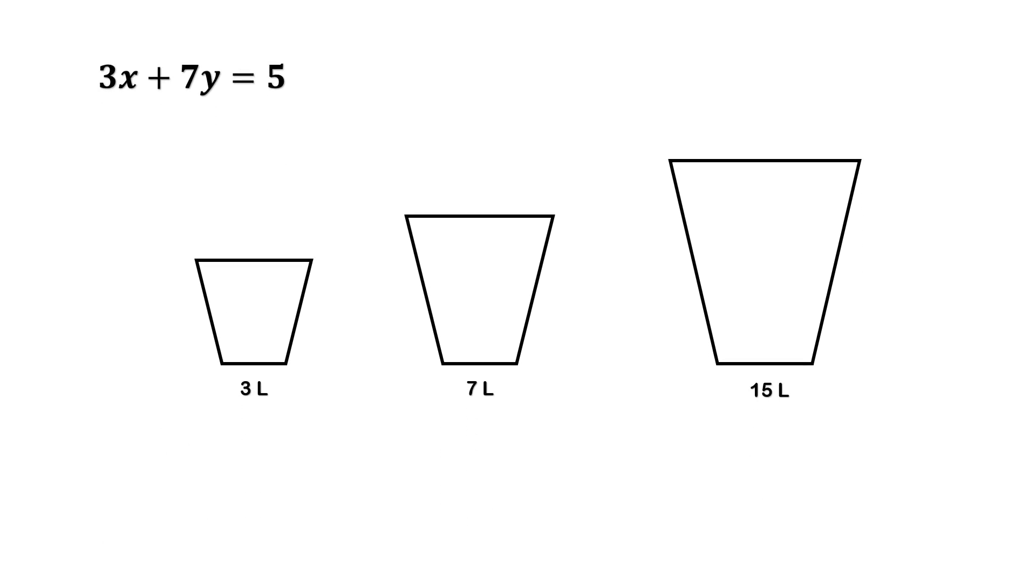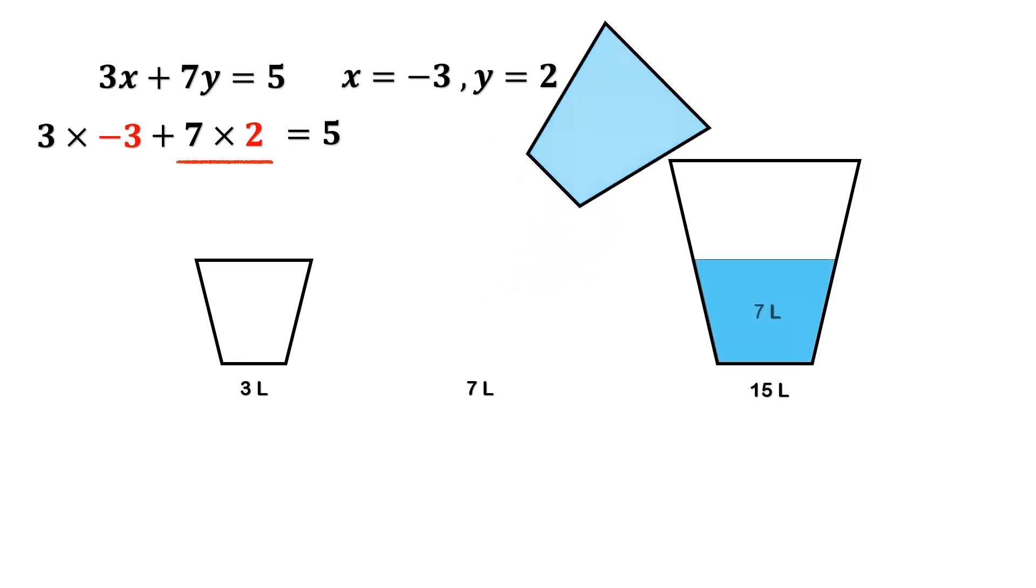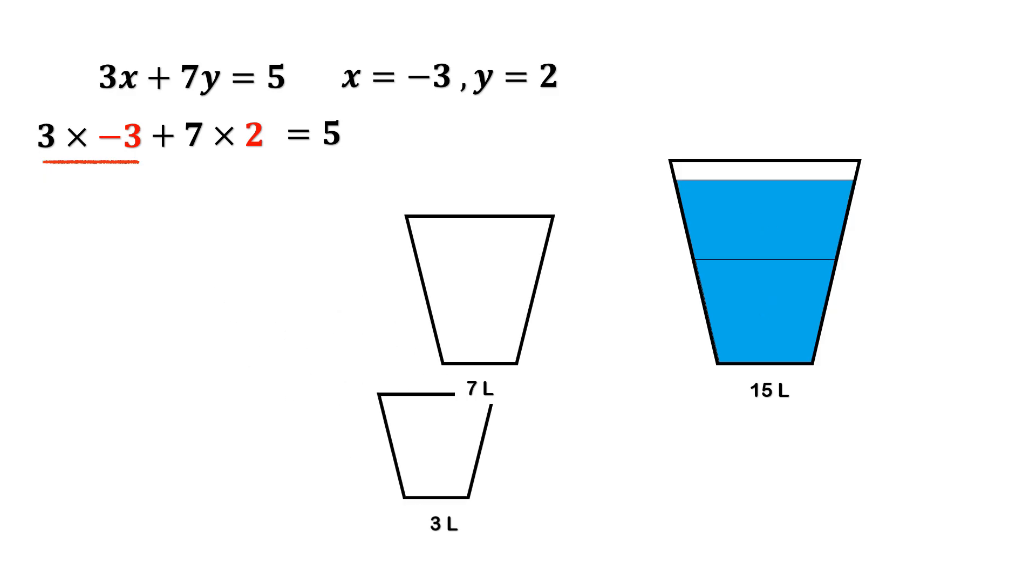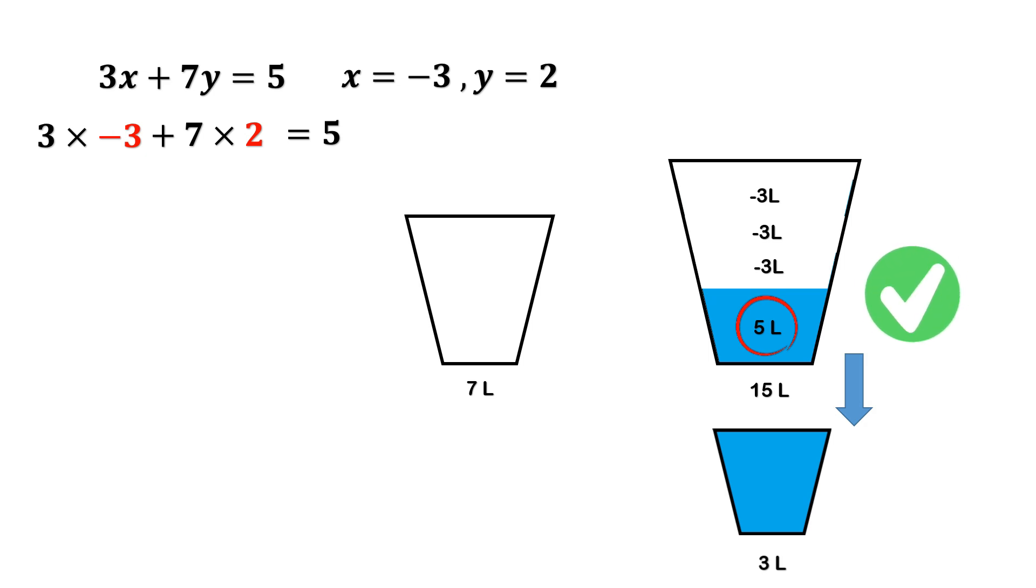But that's not the only solution. If we play around with the numbers a bit, we find another one. x equals negative 3, and y equals 2. What does that mean in practice? It means, fill the 7-liter bucket twice. That gives us 14 liters in the big bucket. Now remove 3 liters from it three times. That subtracts 9 liters from 14. And 14 minus 9 leaves us with 5 liters. Exactly what we needed.